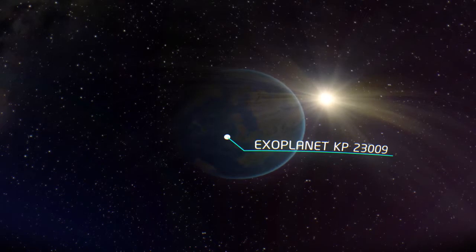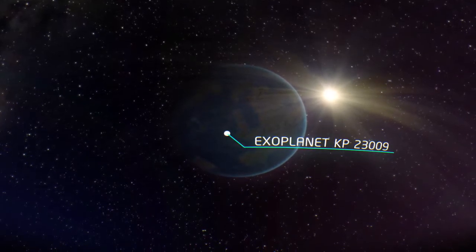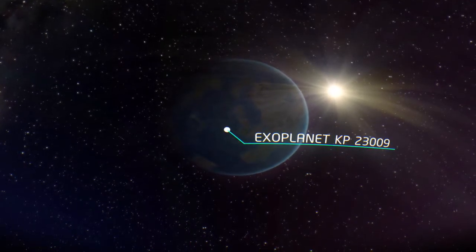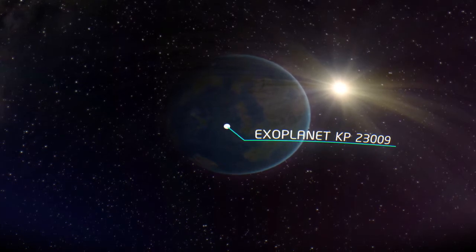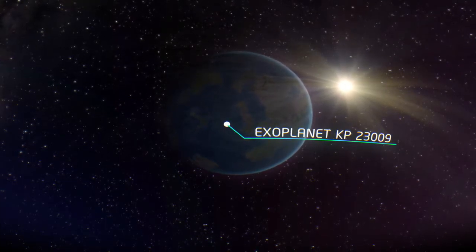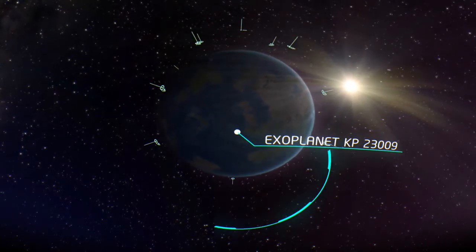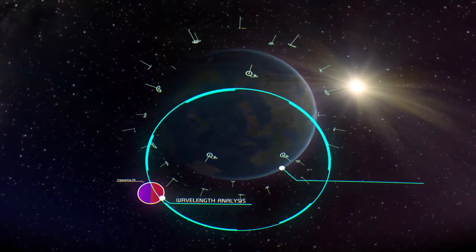Right now, we don't have telescopes powerful enough to see the surfaces of these distant planets. And travelling to them would take thousands of years with our current technology. So how can we ever hope to prove there is life on one of these worlds?